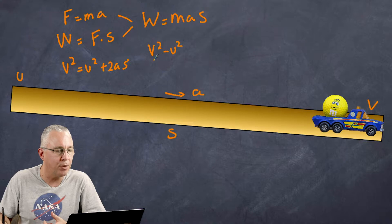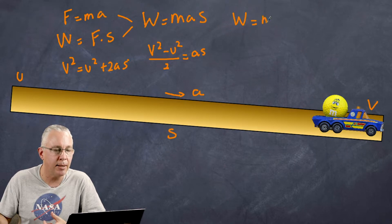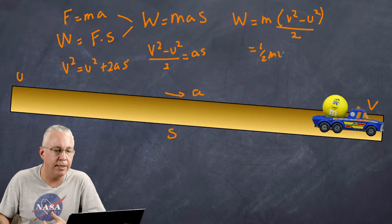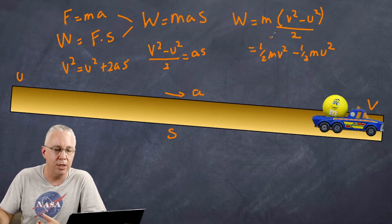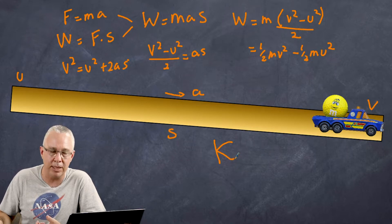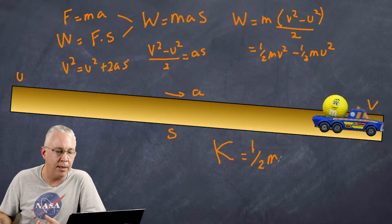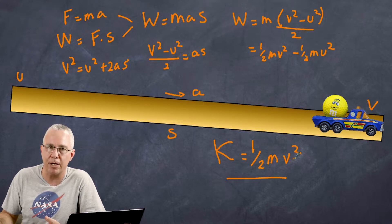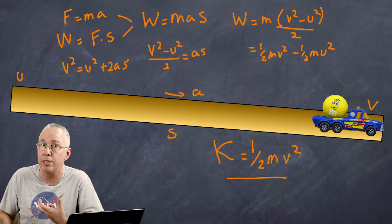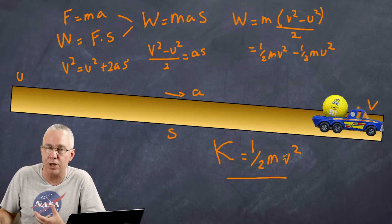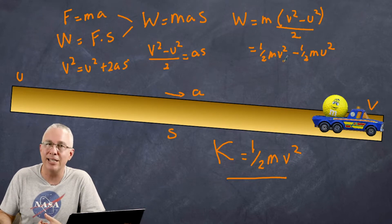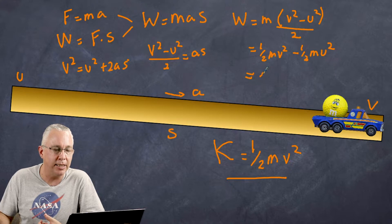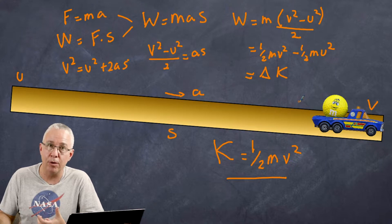Substituting in, the work done equals mass × (v² − u²) / 2, which gives us ½mv² − ½mu². So work changes an object's kinetic energy. This tells us that kinetic energy K = ½mv² — it is the velocity squared multiplied by mass divided by two. That gives you the energy, and there is our relationship between work and kinetic energy.